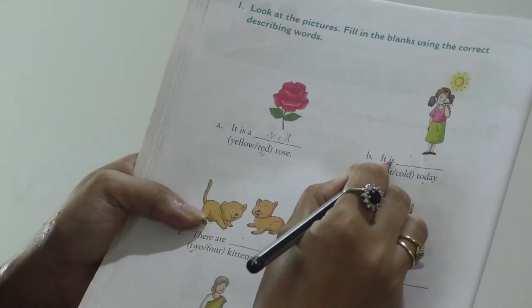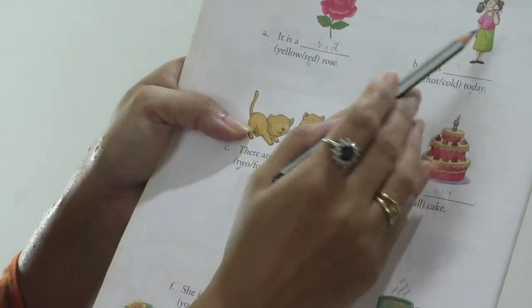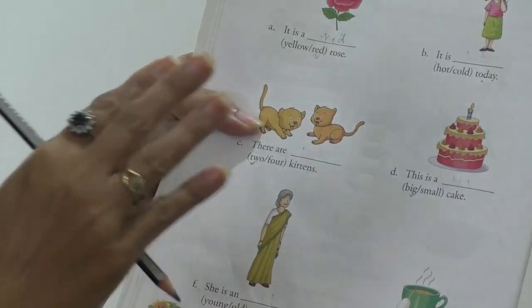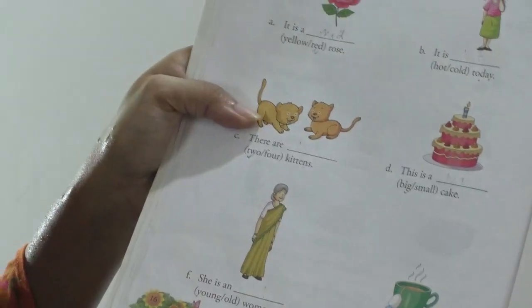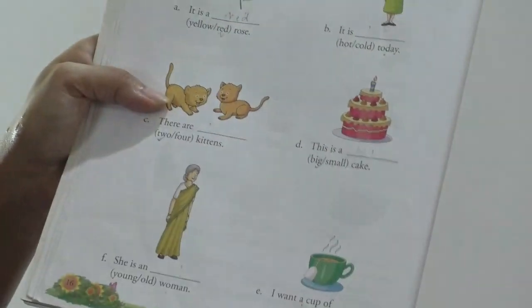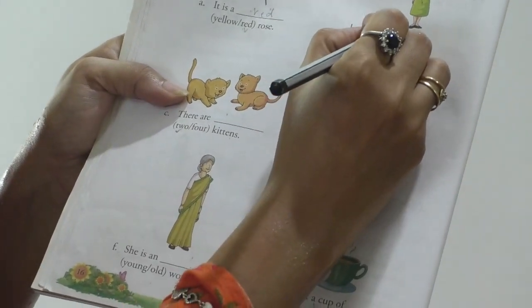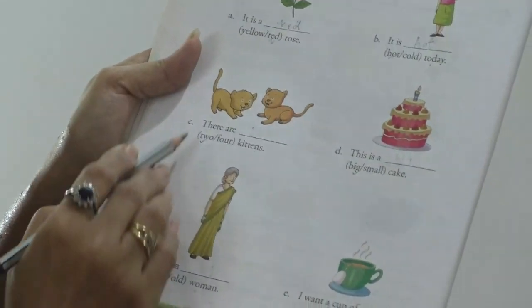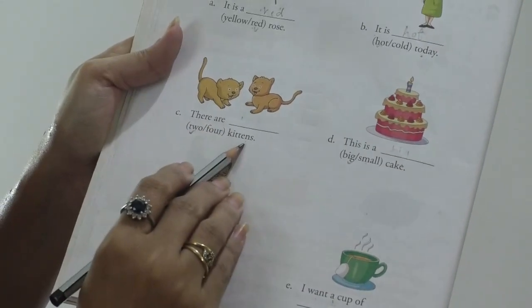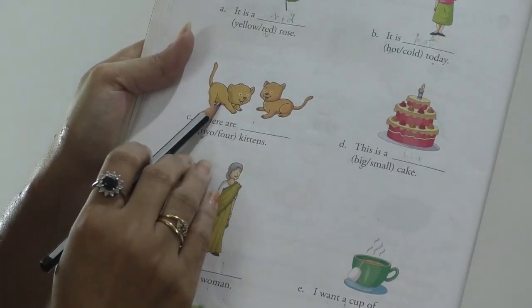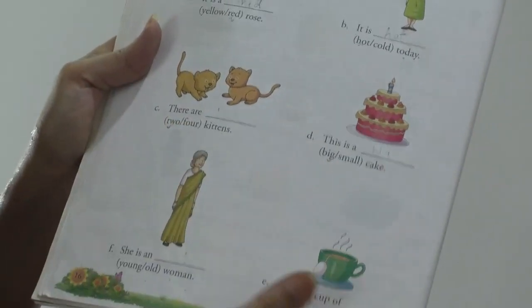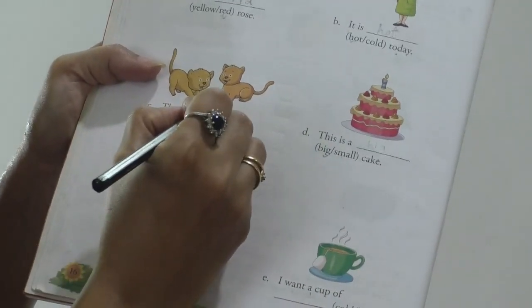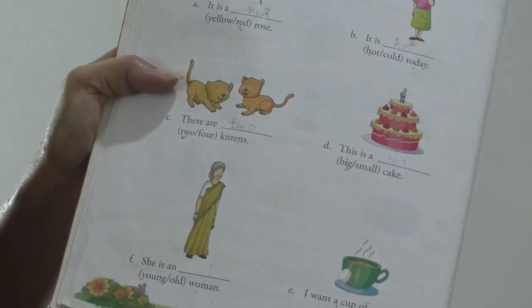Next is it is hot or cold day. You can see the picture. You have to observe the picture. See the girl is standing and using a handkerchief because she feels very hot. Sun shines brightly. How is the day? It is hot day. Next is there are dash kittens. How many kittens are here? You can count one and two. Here the number they told as an adjective. There are two kittens. Right here two kittens.